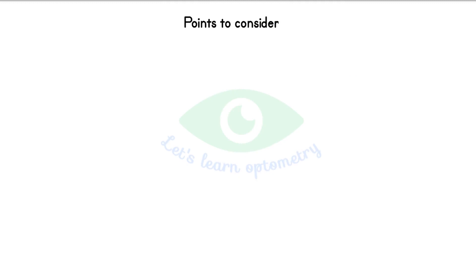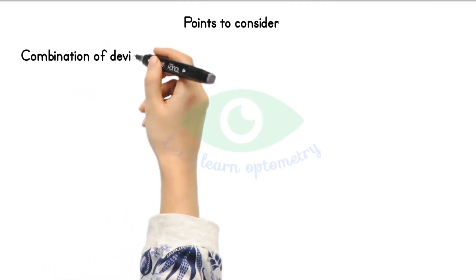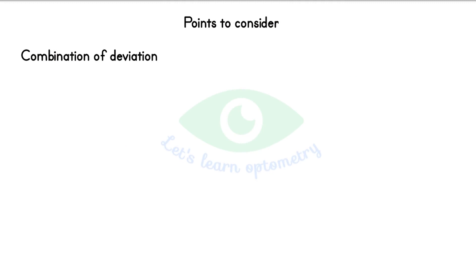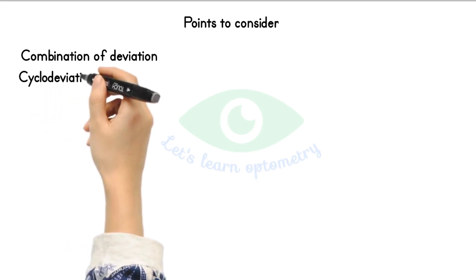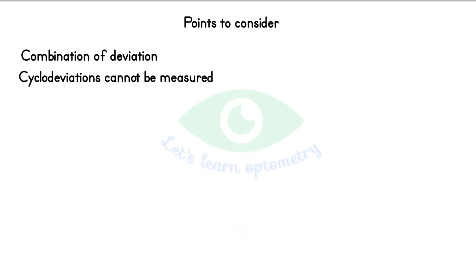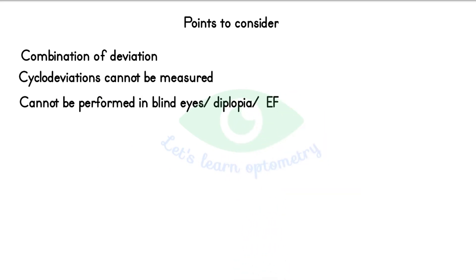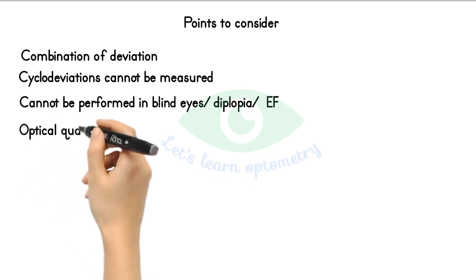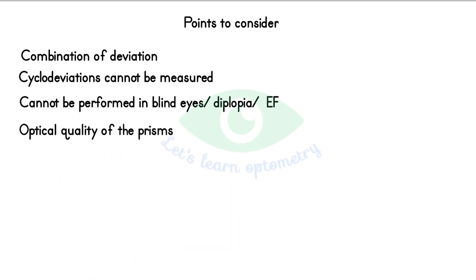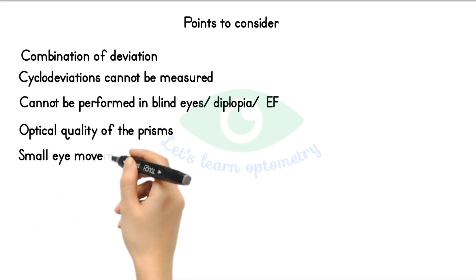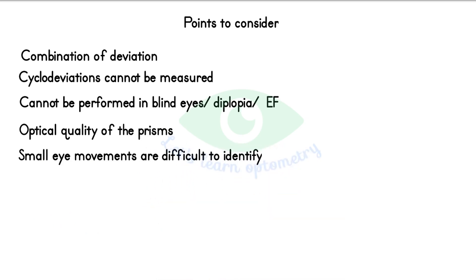Points to consider: combinations of deviations can occur — for example, a patient may have eso deviation combined with a hyper deviation. Cyclo deviations cannot be measured with the cover test; they must be determined subjectively or with a major amblyoscope. The cover test needs good fixation, so it cannot be performed in blind patients, patients with diplopia, or eccentric fixation. The test accuracy is also limited by the optical quality of the prisms — stronger prisms introduce greater errors, and small eye movements of less than three prism diopters are difficult to identify even by experienced practitioners.